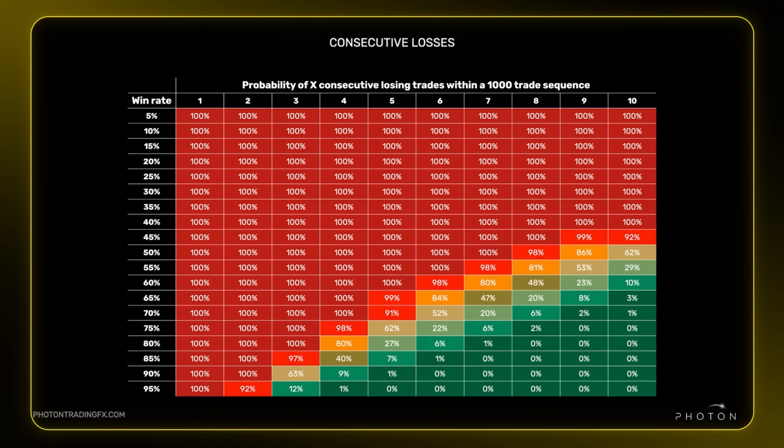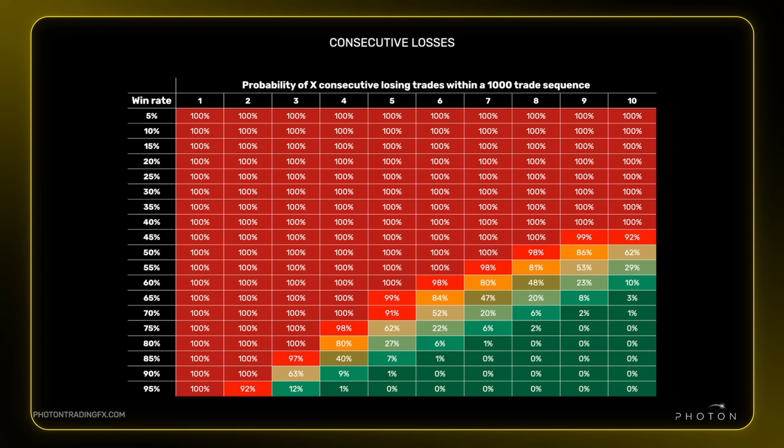None of us are going to execute perfectly through 10 losing trades without negative thoughts creeping in about whether our strategy works. Even at a higher strike rate — 60% win rate — you still have a 98% statistical certainty of having seven losing trades in a row. When you truly accept the random distribution that you will have these large losing streaks, that's when you'll break through to long-term consistency. Losses are literally baked into any statistical edge you have, so when you experience them you can remind yourself of this table and keep executing — it's well within the variance of your edge.